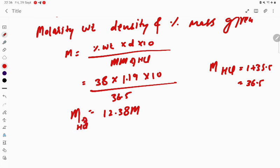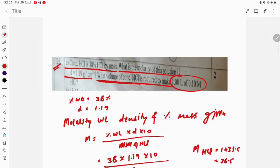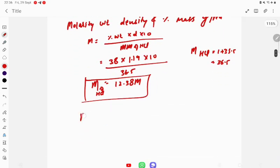The molarity of HCl is 12.38. Now the other part of the question: what volume of concentrated HCl is required to make 1 liter of 0.1 molar solution? Use M1V1 equals M2V2.